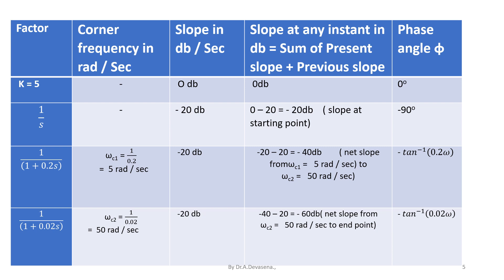The 1/s factor has a phase angle of minus 90 degrees. Now we analyze the third factor 1/(1 + 0.2s). This factor has corner frequency ωc1 = 1/0.2 = 5 radians per second. This is a first order pole, so it has a slope of minus 20 dB. The slope at any instant is the sum of present and previous slopes: minus 20 dB plus minus 20 dB equals minus 40 dB. This is the net slope from ωc1 = 5 radians per second to ωc2 = 50 radians per second.